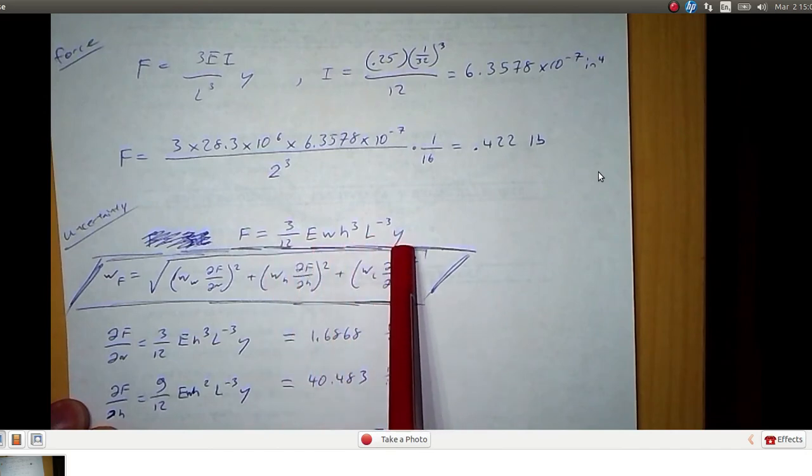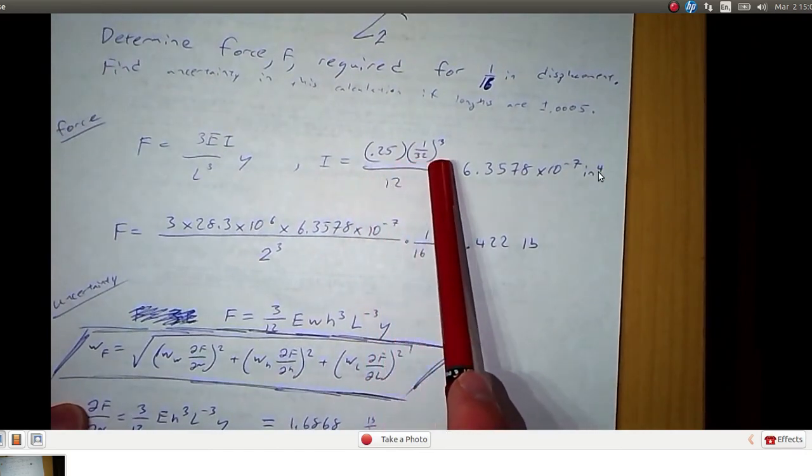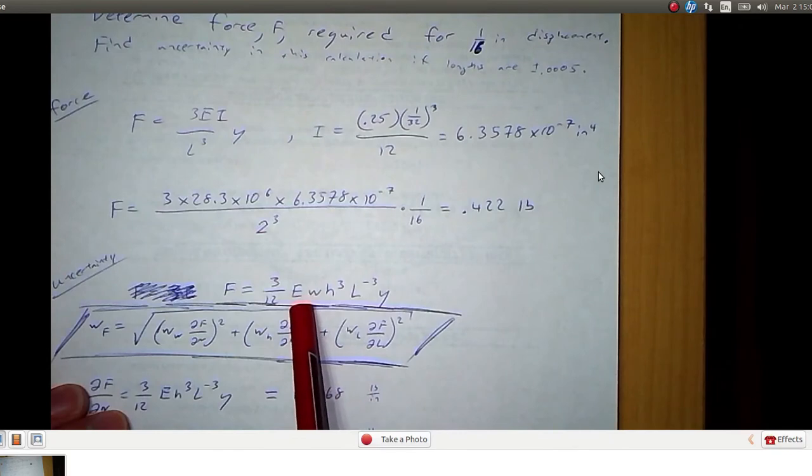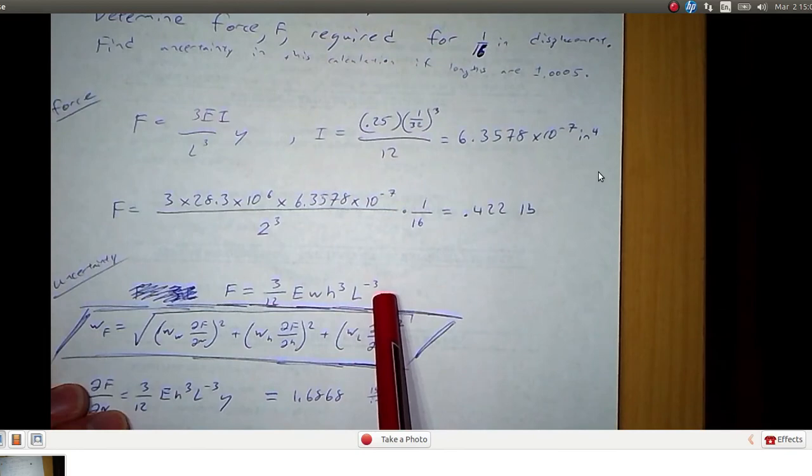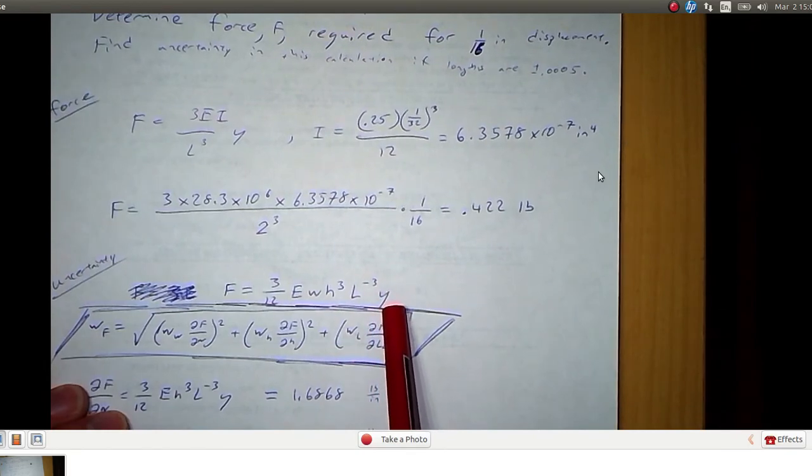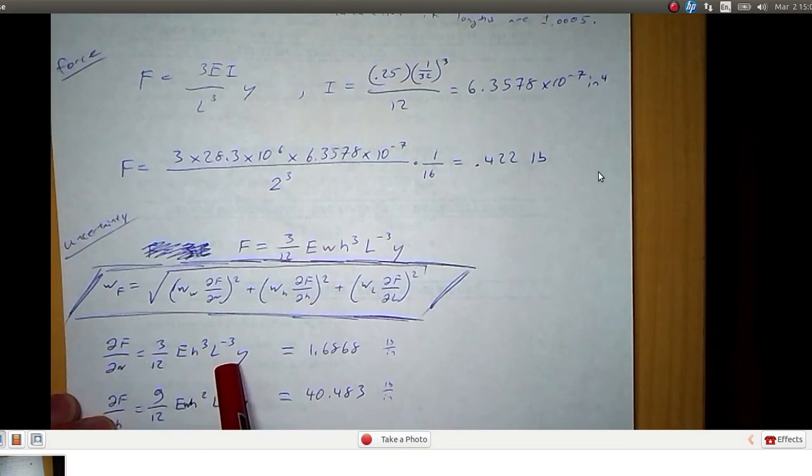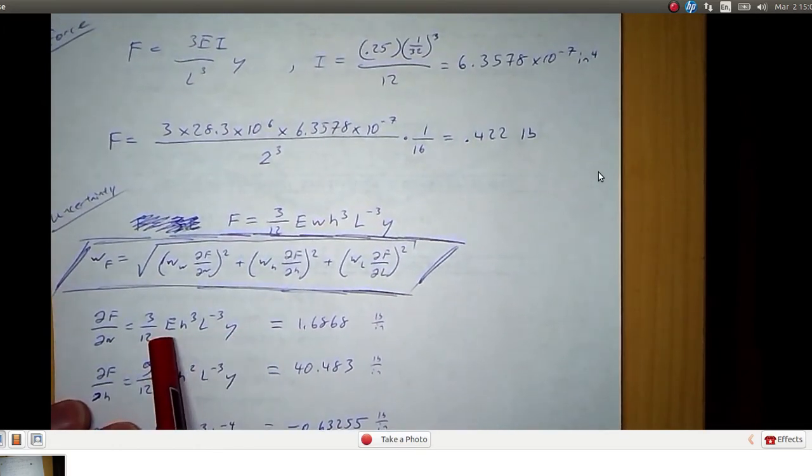Here is that expression rewritten where I substituted I is equal to width times height cubed over 12. So force is 3 twelfths times modulus of elasticity times width times height cubed times length to the negative 3 power times the displacement. So partial derivative of that expression with respect to width. We come up with 3 twelfths E times h cubed L to the negative 3 Y.